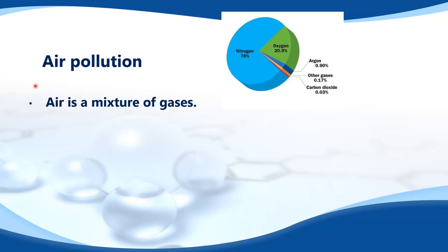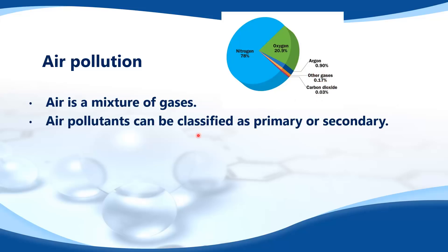Air Pollution. Air is a mixture of gases: 78% nitrogen, 21% oxygen, 0.9% argon, 0.03% carbon dioxide, and the remainder is other gases.